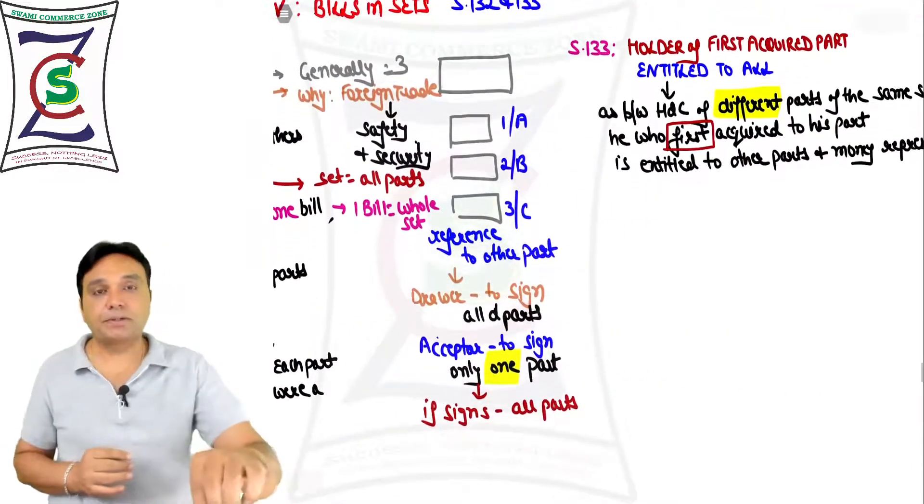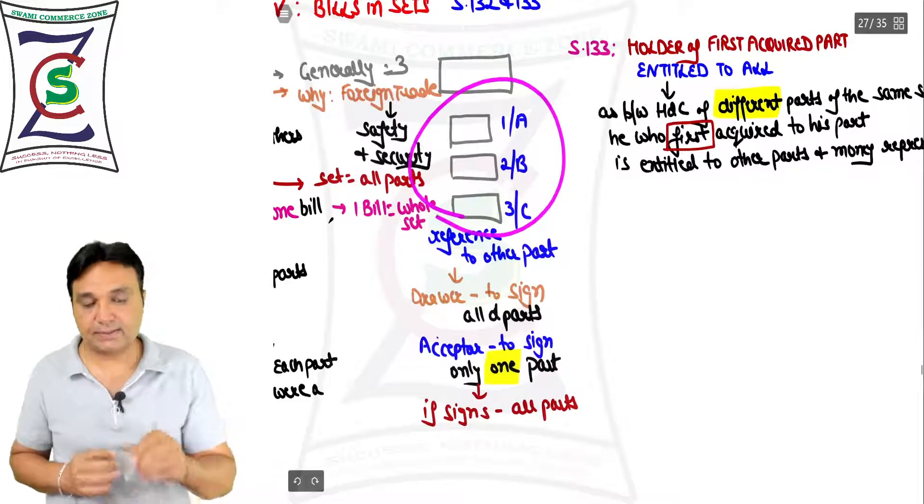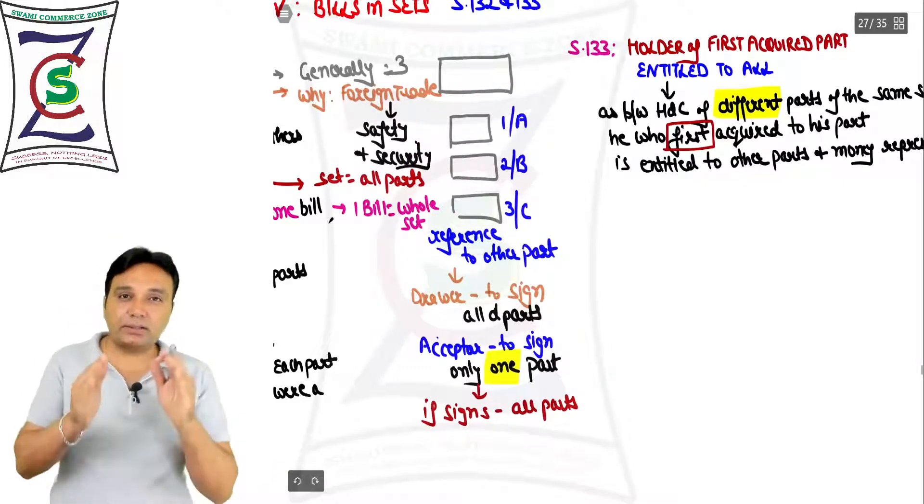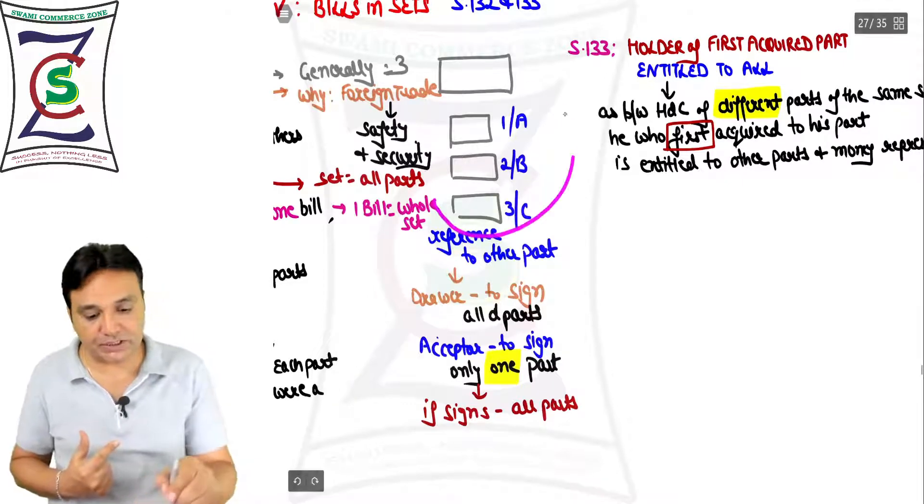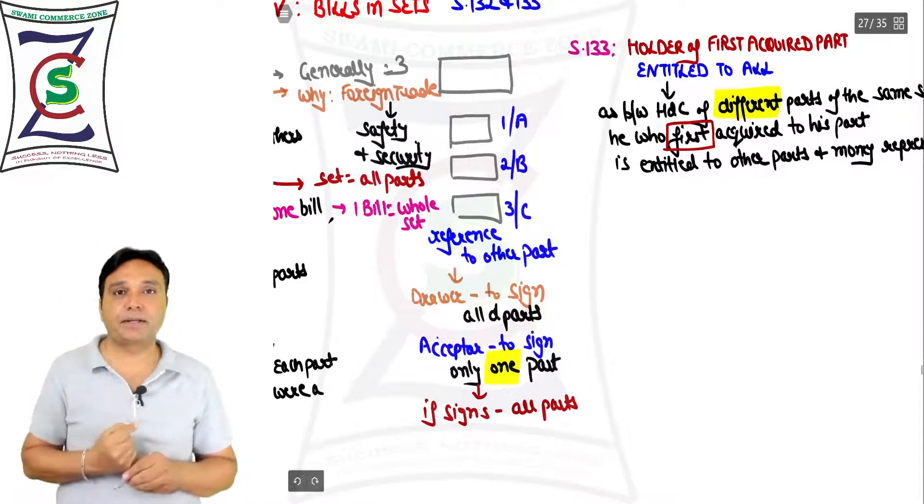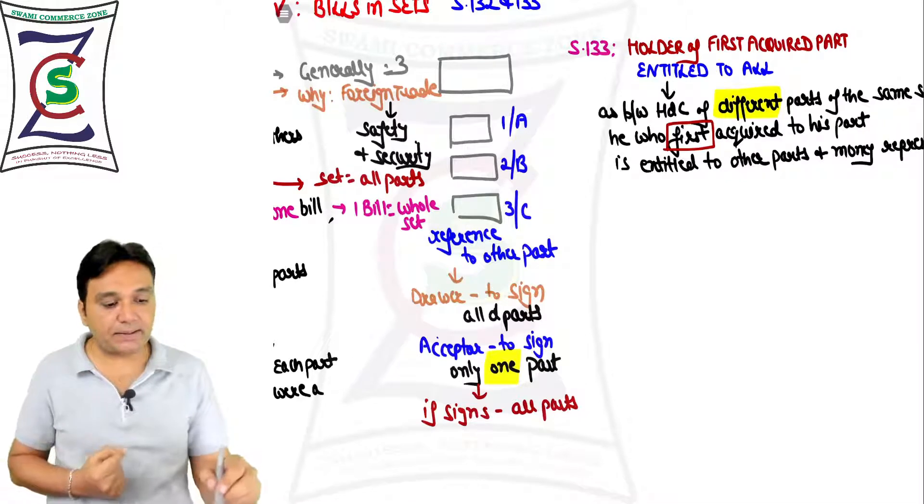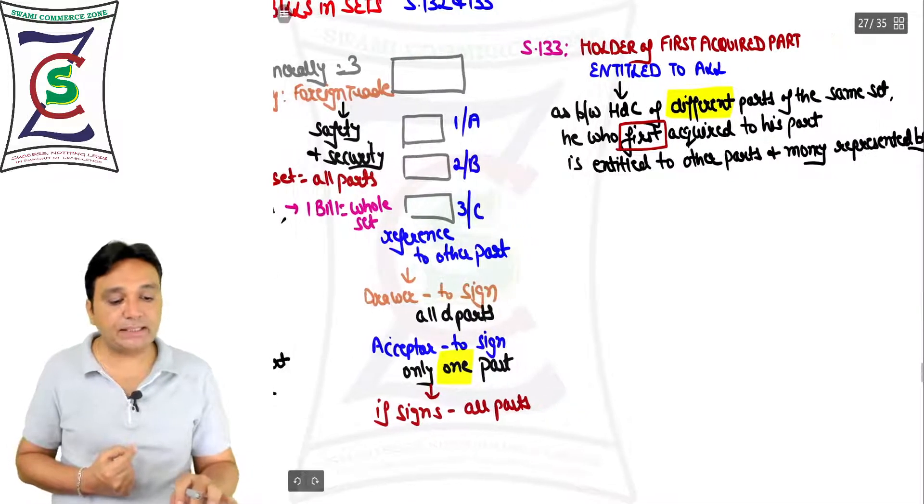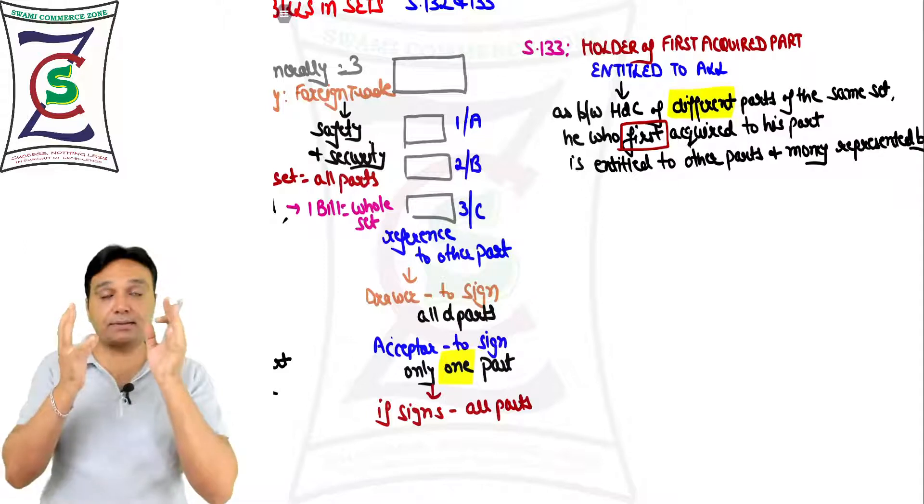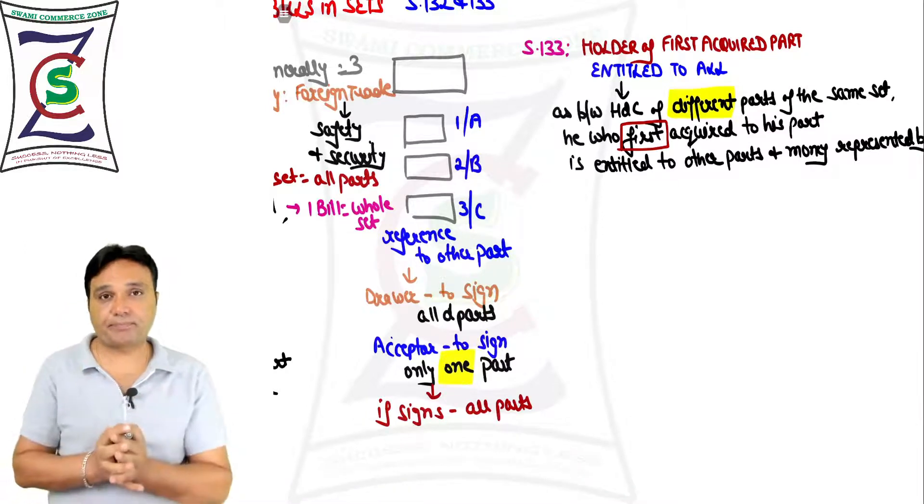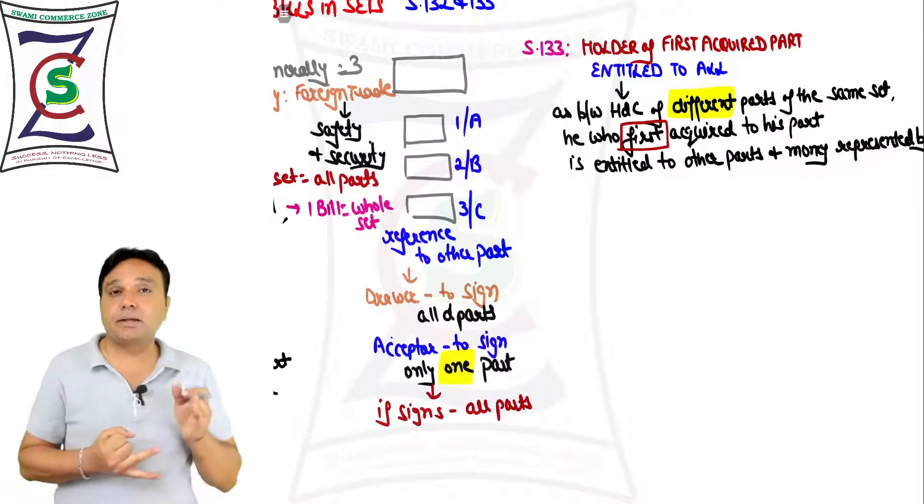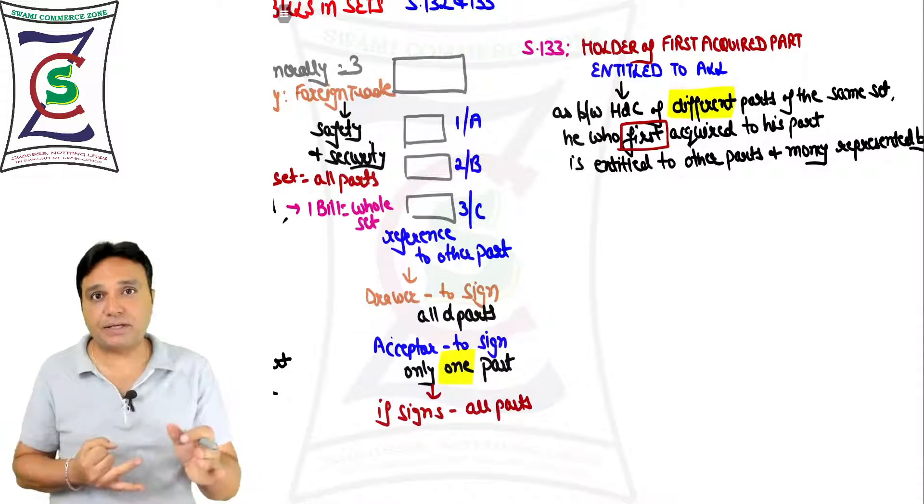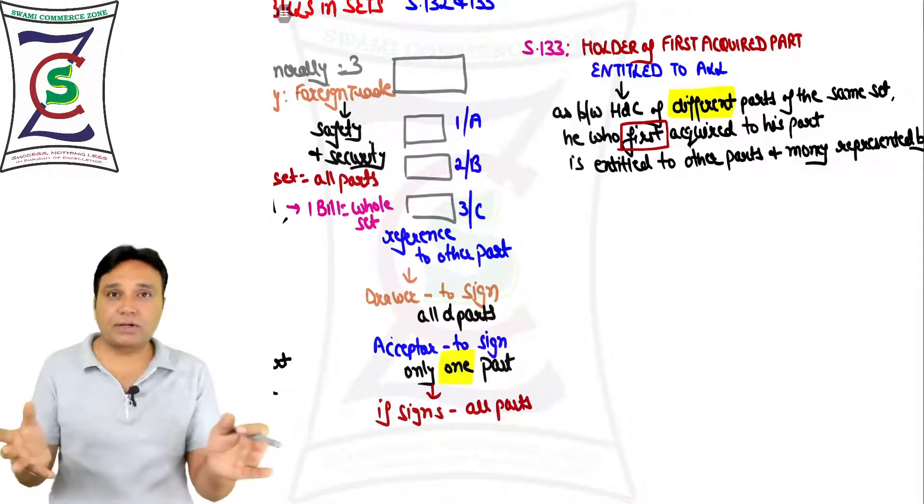Section 133 talks about - let's say there are three parts, all the three parts we are presuming are going to be in possession of one person. But let's say they are in possession of three different persons and all three different persons are HDC - if you can recall, HDC: holder in due course, which we did under Section 9.